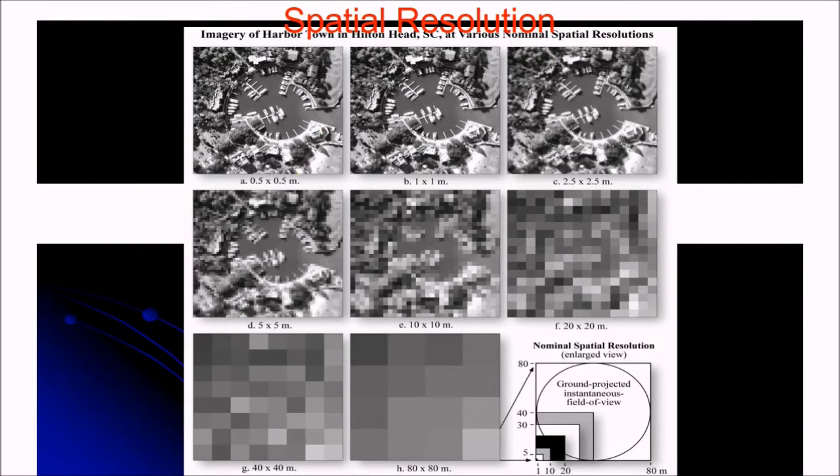Spatial resolution. If you see, this is 0.5 by 0.5 meter. This is 80 by 80 meter. So the nominal spatial resolution, this is the ground projected instantaneous field of view.